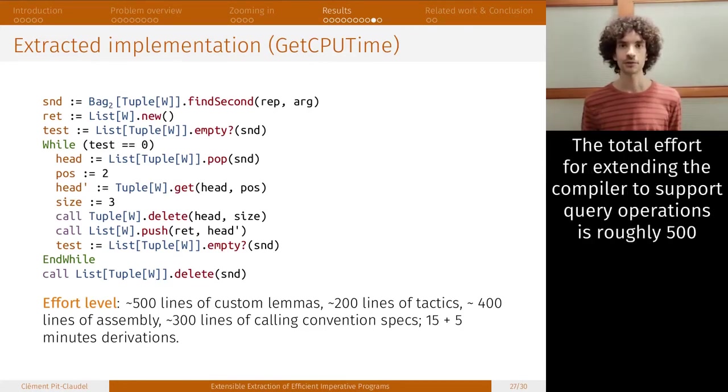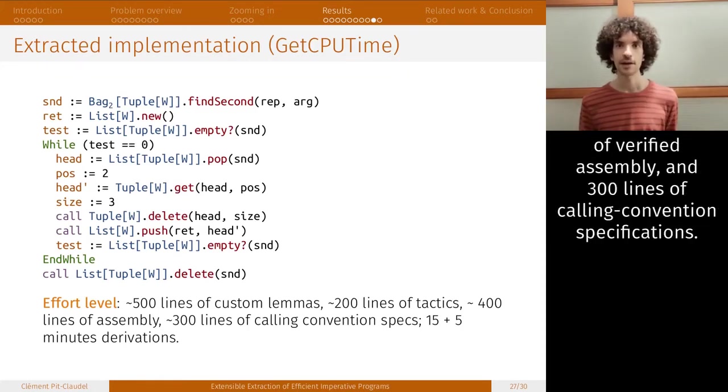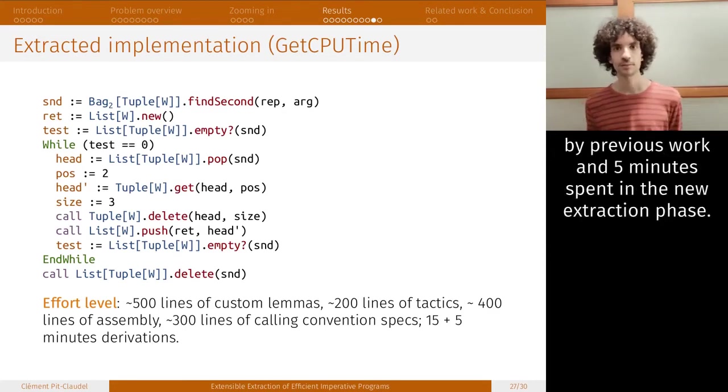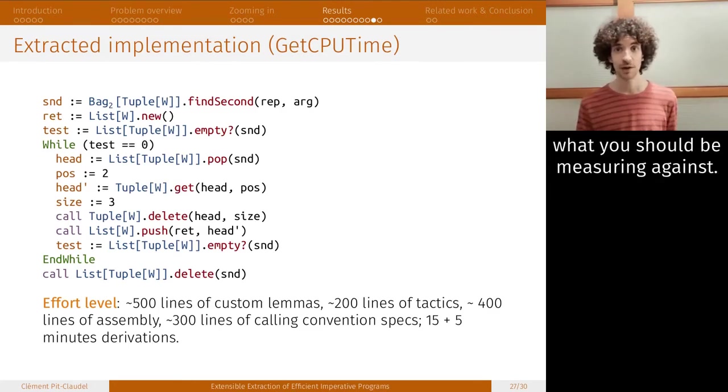The total effort for extending the compiler to support query operations is roughly 500 lines of custom lemmas and proofs, 200 lines of tactics driving the compiler, 400 lines of verified assembly, and 300 lines of calling convention specifications. The total derivation takes 20 minutes, with about 15 minutes spent in the stage handled by previous work and 5 minutes spent in the new extraction phase.